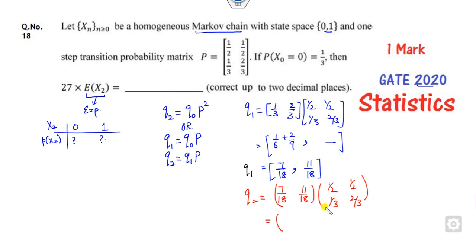Again, we will try to compute the first part only. Second part we can subtract. It will be 7 by 36 plus 11 by 54. What is the answer? If you take the LCM of this, 108 will be the LCM. So it's 43.